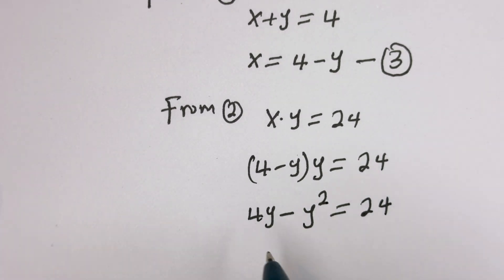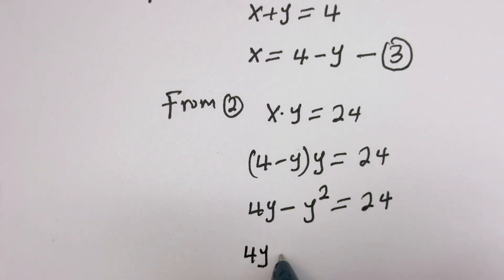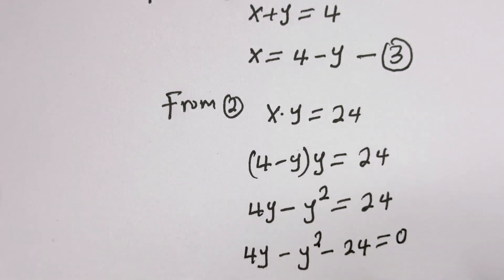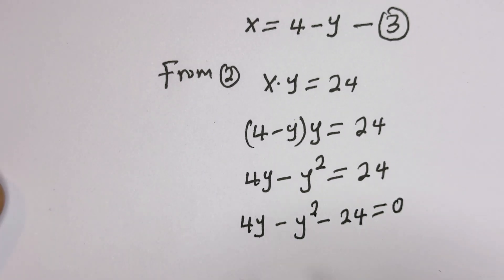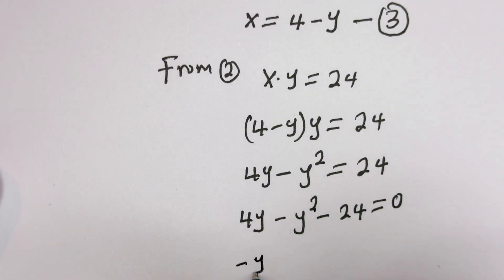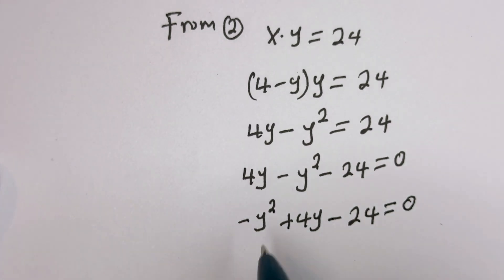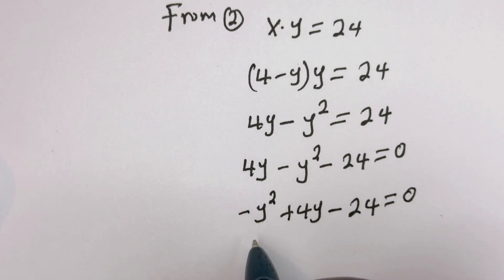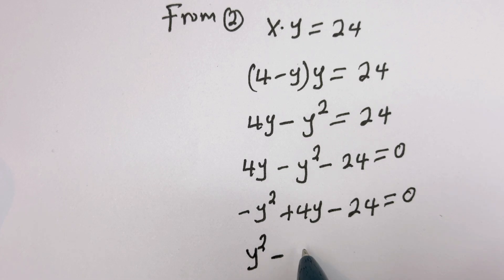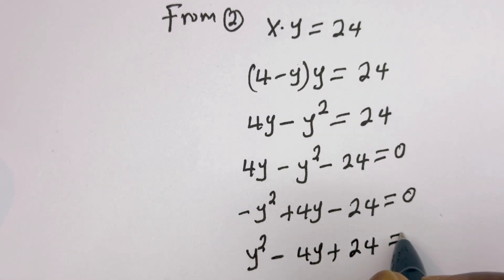Let's bring this 24 to this side: we have 4y minus y squared minus 24 is equal to 0. Then we can rearrange this: minus y squared plus 4y minus 24 equals 0. If we multiply the whole expression by minus 1, we have y squared minus 4y plus 24 is equal to 0.